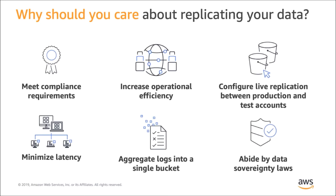Amazon S3 customers receive a very high level of availability and durability for their S3 data in every AWS region. Customers often have compliance or business requirements to replicate their data to a second region, hundreds or even thousands of miles away from their primary location. S3 Replication provides an automatic mechanism to make identical copies of your objects to a destination of your choice. Replication can help you meet data resiliency compliance requirements or place copies of your data close to internal users for operational efficiency or close to external users to minimize their access latency.